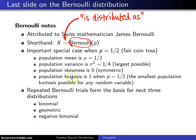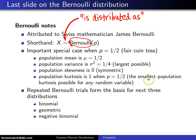The population kurtosis is one when p is equal to one-half, and that happens to be the smallest population kurtosis possible for any random variable. That is significant as well — the value of one for the population kurtosis is, in some sense, the global minimum.